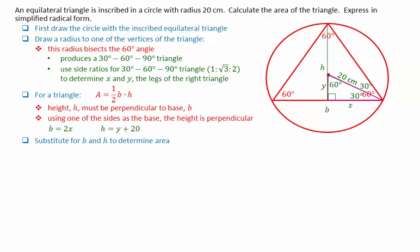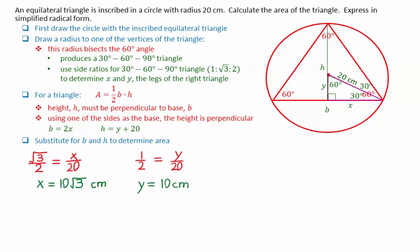We can then substitute for b and h to determine the area. First, using the ratios of the sides for a 30-60-90 triangle, √3 over 2 equals x over 20, giving x equals 10√3 centimeters. Similarly, to find y, we use the ratio 1 over 2 equals y over 20, giving y equals 10 centimeters.